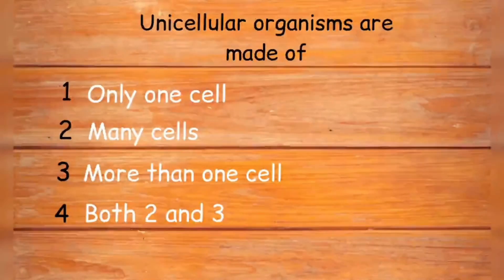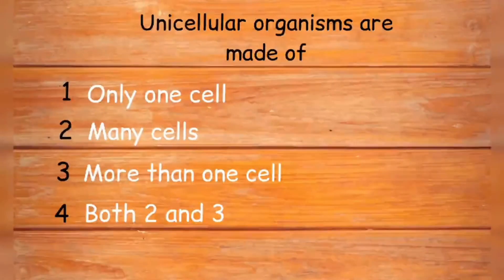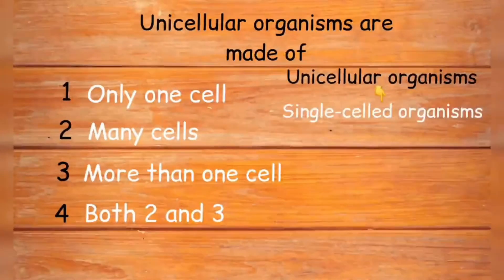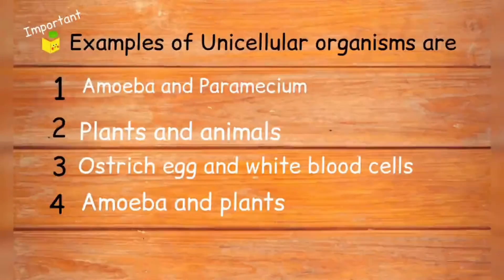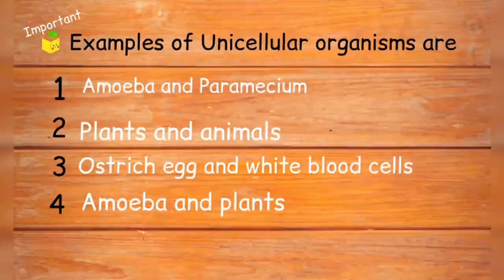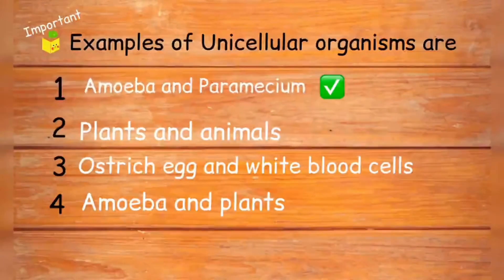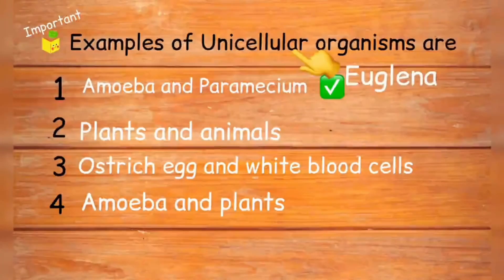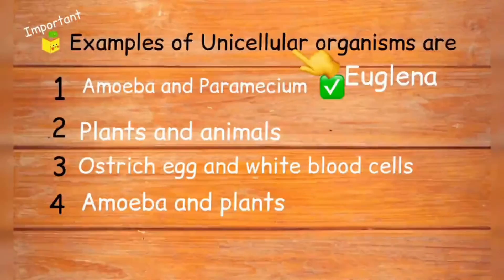Unicellular organisms are made of: only one cell, many cells, more than one cell, or both two and three? Unicellular organisms are also called single-celled organisms because they are made up of only one cell. Examples of unicellular organisms are amoeba and paramecium. Euglena is another very important example. Plants and animals are multicellular organisms made of multiple cells. Options with plants are wrong. The correct answer is option one.